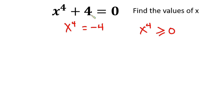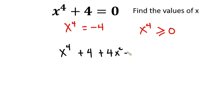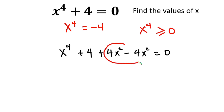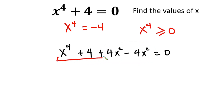The question is: how do we find the complex solutions for this problem? That is what we are going to do today. We have x to the 4th power plus 4, and I'm going to add 4x squared and then subtract 4x squared, equating everything to 0. The reason for adding and subtracting 4x squared is that if we consider those three terms, we can form a perfect square out of them.